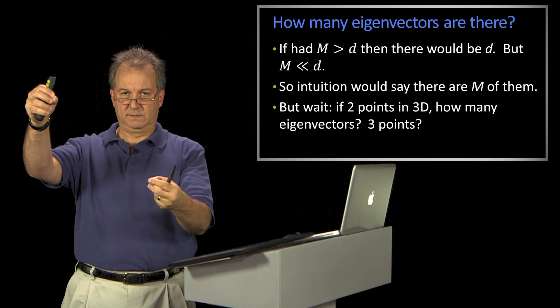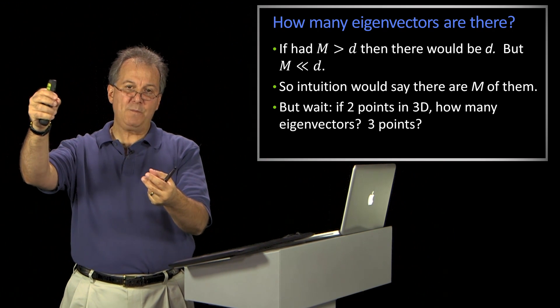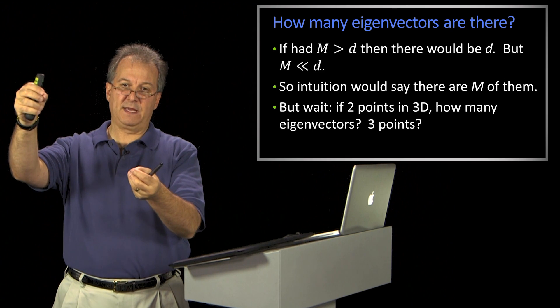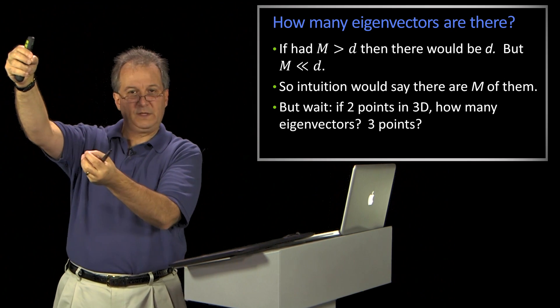Suppose I gave you two points in three dimensions. How many vectors can span those? Just one, right? I go between them.